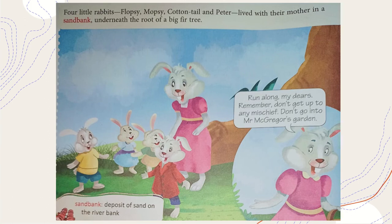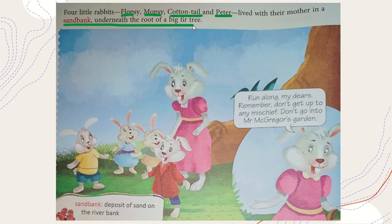Once upon a time, four little rabbits — Flopsy, Mopsy, Cottontail, and Peter — lived with their mother in a sandbank underneath the root of a big fir tree.